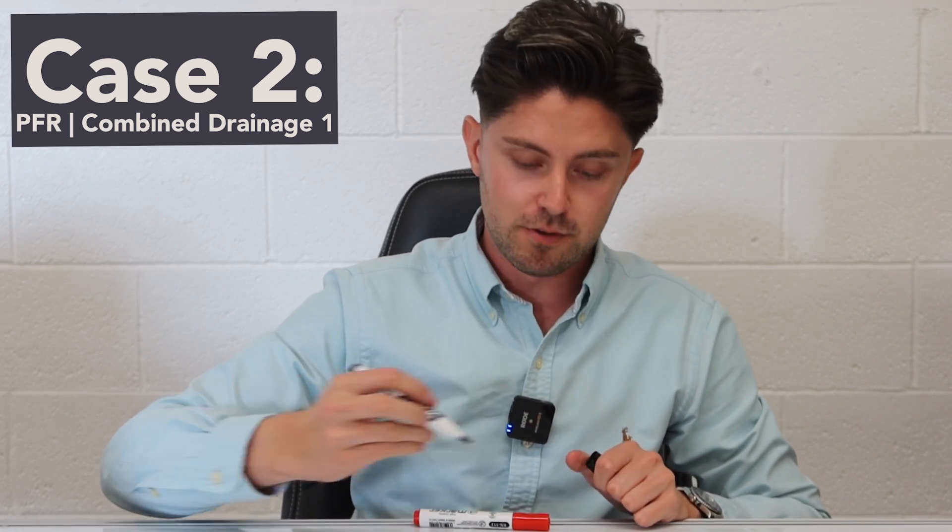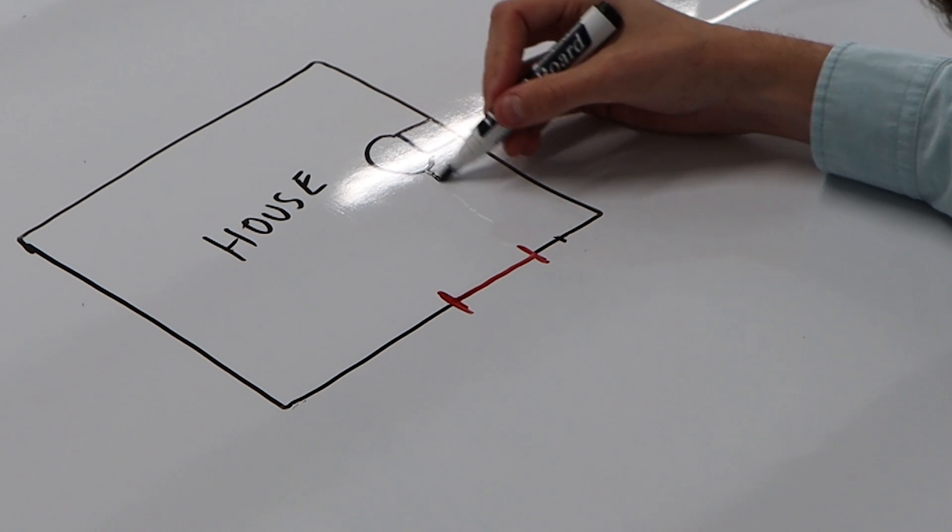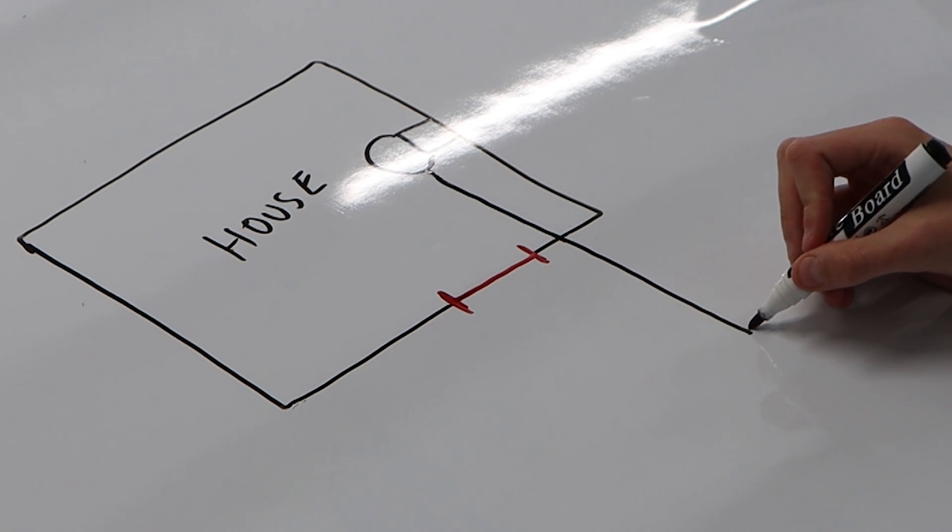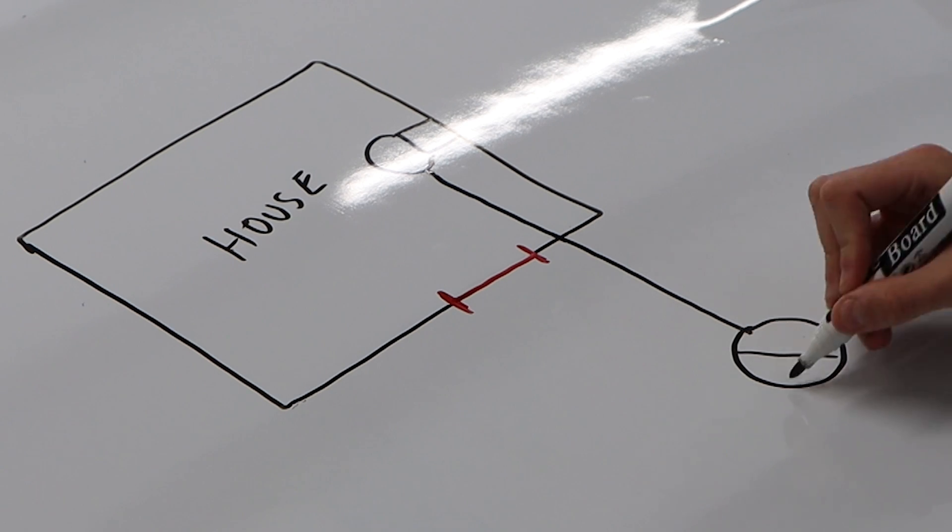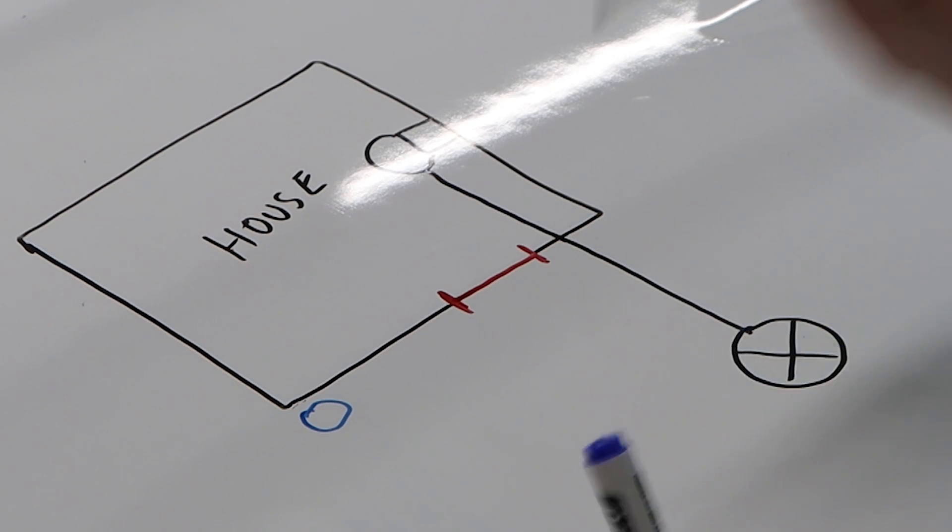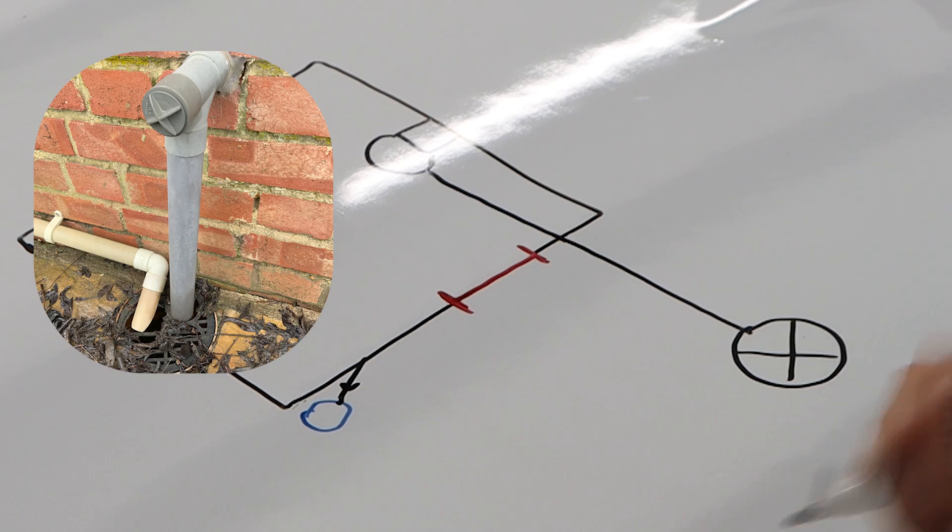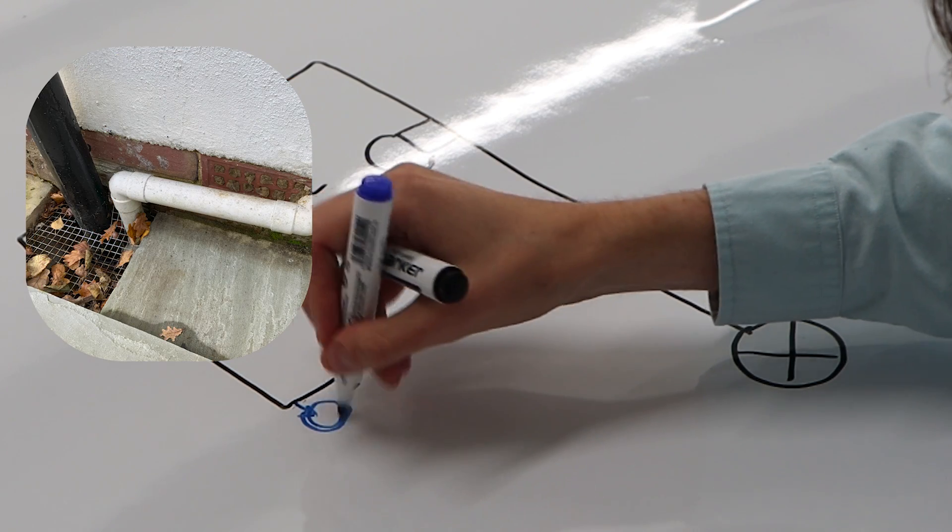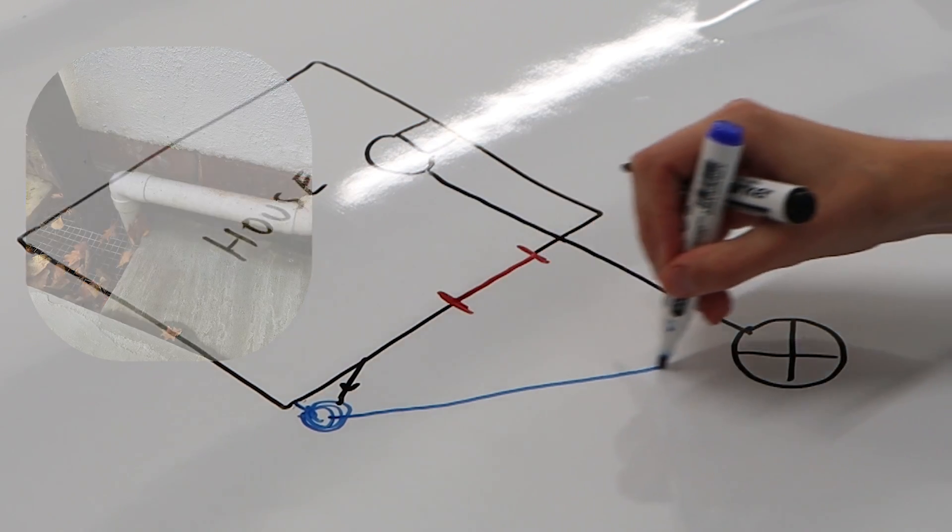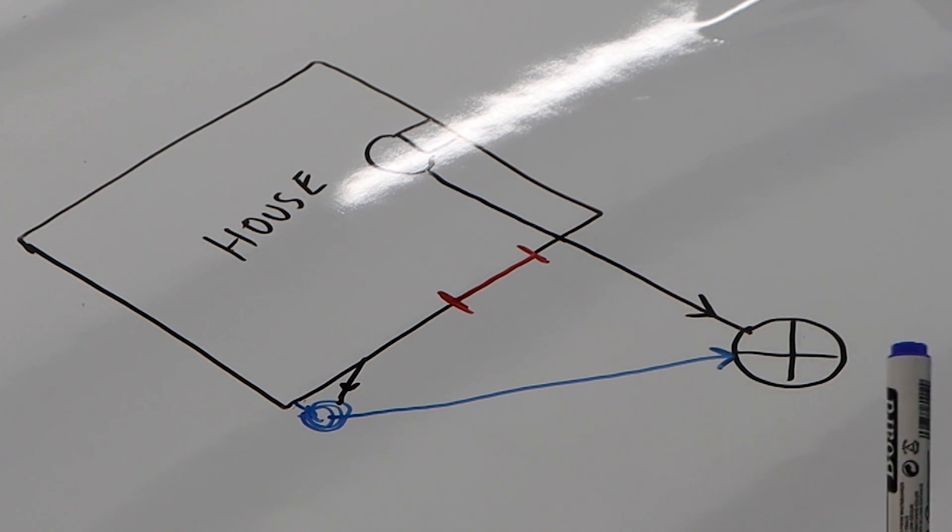Now for our second case, it's made slightly more difficult because it's a combined system. We've got our toilet flowing out into the manhole, but we also have a drain here with your kitchen waste flowing in through a 40 millimeter pipe, and also your rainwater flowing into the drain, and then that could flow into this manhole.